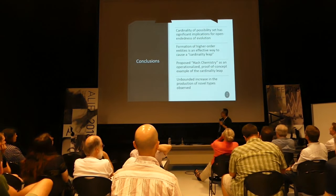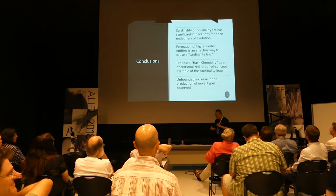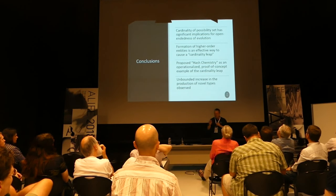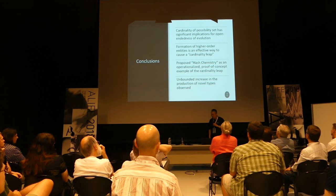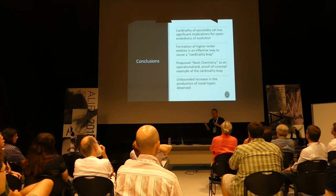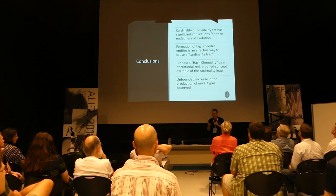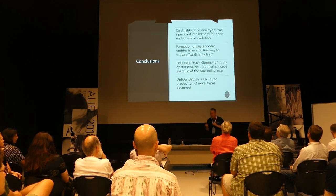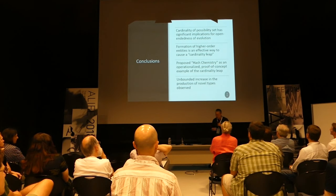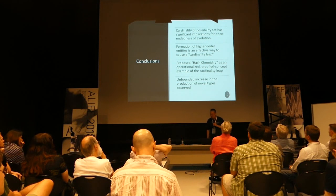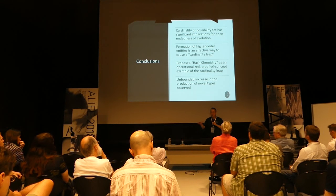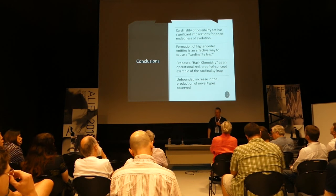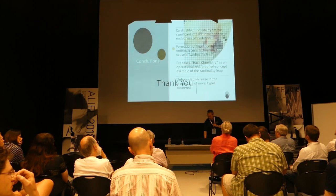Conclusions: the key idea is to consider higher-order entities of the basic individual elements, which naturally leads to cardinality leap regardless of the original assumptions. That's easier said than done. But here we propose one particular tangible example called hash chemistry that shows, at least at proof-of-concept level, that the cardinality leap can produce at least so far unbounded continuous production of new entities. Thank you very much.